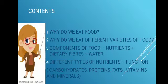In this chapter we learn about why do we eat food, why do we eat different varieties of food, and the different components of food that includes nutrients, dietary fiber, water, and different types of nutrients — their functions: carbohydrates, protein, fats, vitamins and minerals.